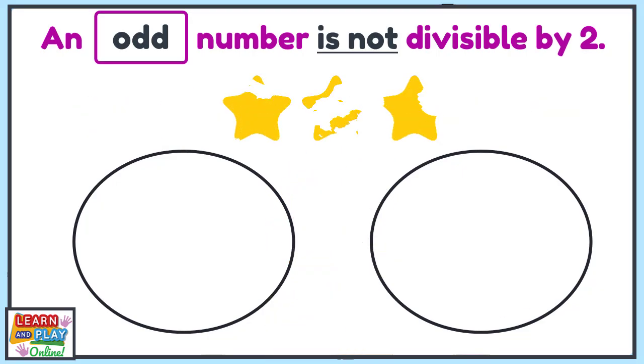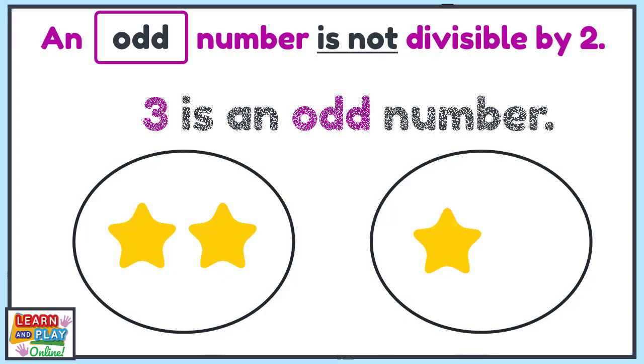This time we have 3 stars to share into 2 groups. You can see that we have unequal groups because one group has 2 stars and the other group has only 1 star. So this proves that the number 3 is an odd number.